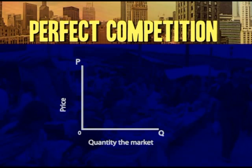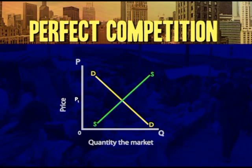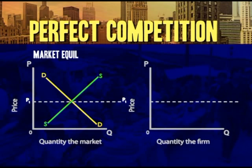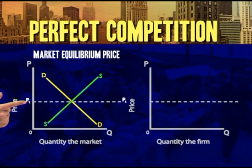Let's construct a picture to illustrate perfect competition at work. If we assume there's perfect competition, we assume that the selling price has been determined by the market. As we saw earlier, the selling price would therefore be the equilibrium price — the price determined by the intersection of the market demand and market supply curves.